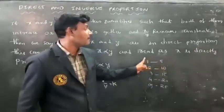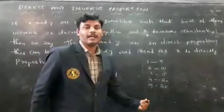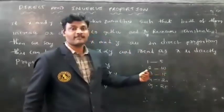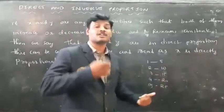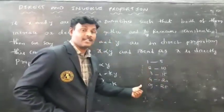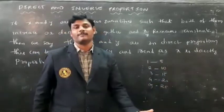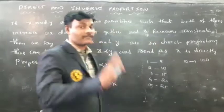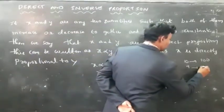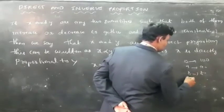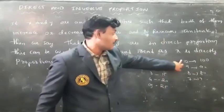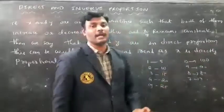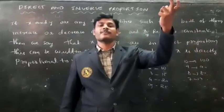Here both quantities — balls as one quantity and their cost as another — are increasing. Cost of ten pens is one hundred rupees, cost of nine pens is ninety rupees, cost of eight pens is eighty rupees, cost of seven pens is seventy rupees. Here the number of pens is decreasing and also the cost of those pens is also decreasing.